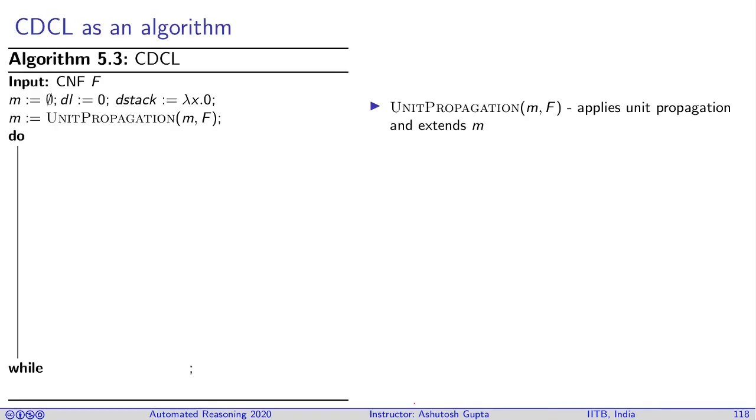Let's write down this algorithm in algorithmic form. First, you have a formula as input. You maintain a few data structures: a model, a partial assignment, the current decision level, and the DSTACK. It basically records when you made a decision and how big was the assignment.